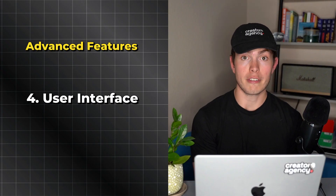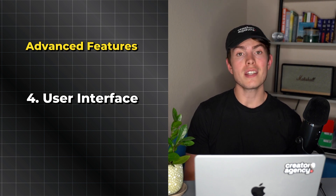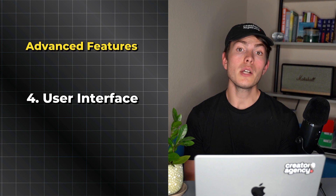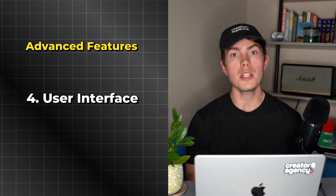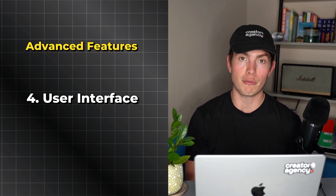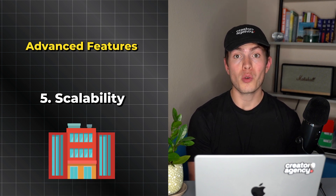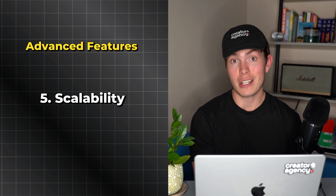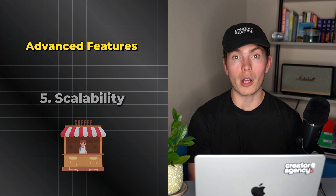Next we've got user interface. Melio definitely takes the cake here — it has a beautiful and intuitive interface that is very easy to use, and also has a mobile app that makes it easy to pay vendors on the go. Bill.com on the other hand is likely going to take a little bit longer to get used to, and you might have to invest in some training to really get the most out of the platform. The last big feature difference comes down to scalability. Bill.com is designed to handle larger-scale financial operations and is suitable for businesses with complex financial needs, while Melio caters towards small businesses and simpler payment requirements.